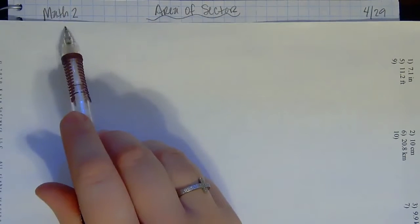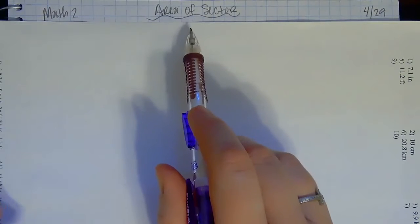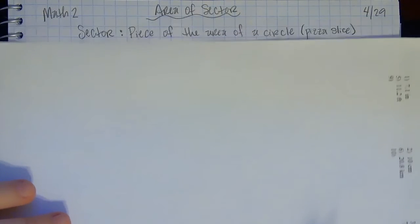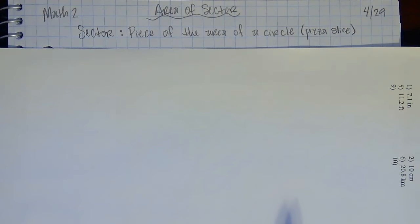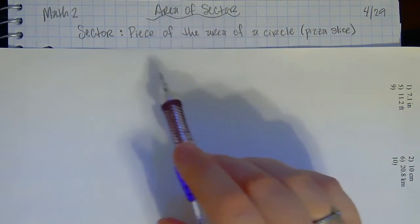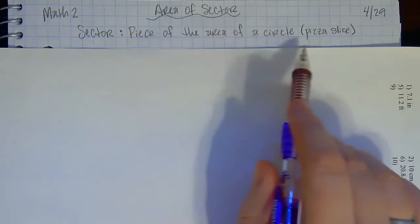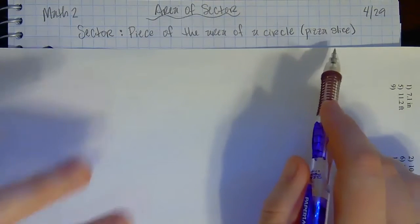Hey guys, happy Wednesday — today is April 29th, this is for Math 2, and today we're going to talk about area of a sector. First of all, a sector is a piece of the area of a circle. Just like arc length was a piece of the circumference, a sector is a piece of the area. Arc length is like the crust of a pizza, and a sector is like a slice of pizza.